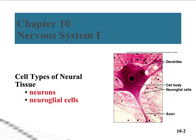Neural tissue, or nervous tissue, is composed of only two types of cells: the neurons and the neuroglial cells. The picture at the right is showing you a basic multipolar neuron.